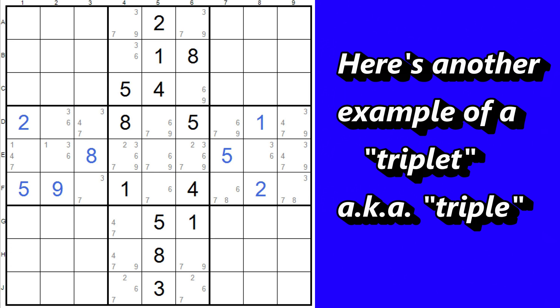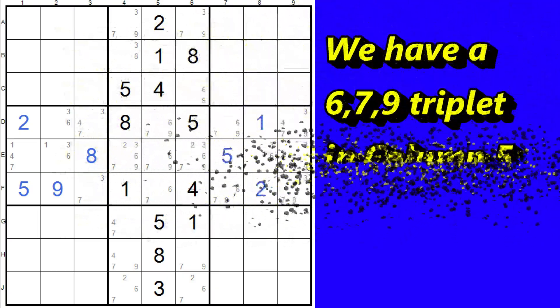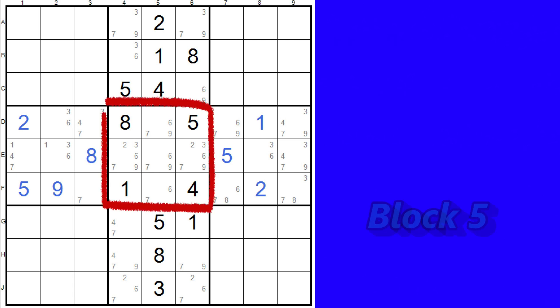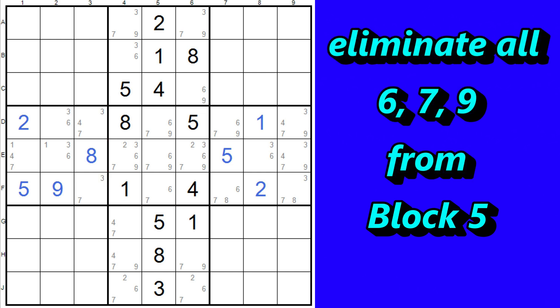Here's another example. In column five, the three cells in rows D, E, and F contain three numbers — six, seven, and nine — and no other numbers, so we have a triplet here. These three cells must contain those three numbers. We don't know which cell will be the six, the seven, or the nine, but those numbers must go into these three cells and nowhere else in the column or block. Those cells are all in the same block — block five — and in the same column — column five, so all the sixes, sevens, and nines can be eliminated as candidates from block five and also column five. But the rest of column five is already filled in, so let's just look at block five.